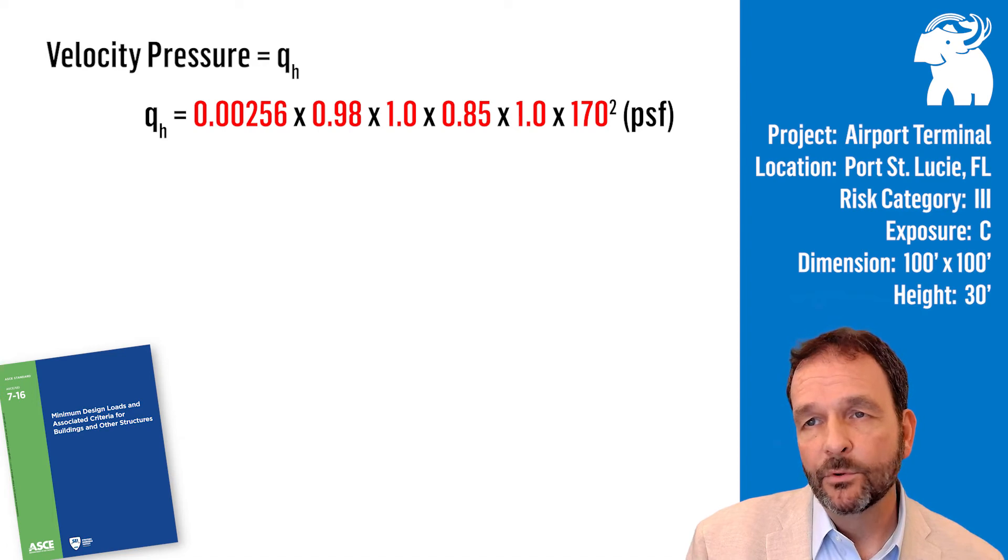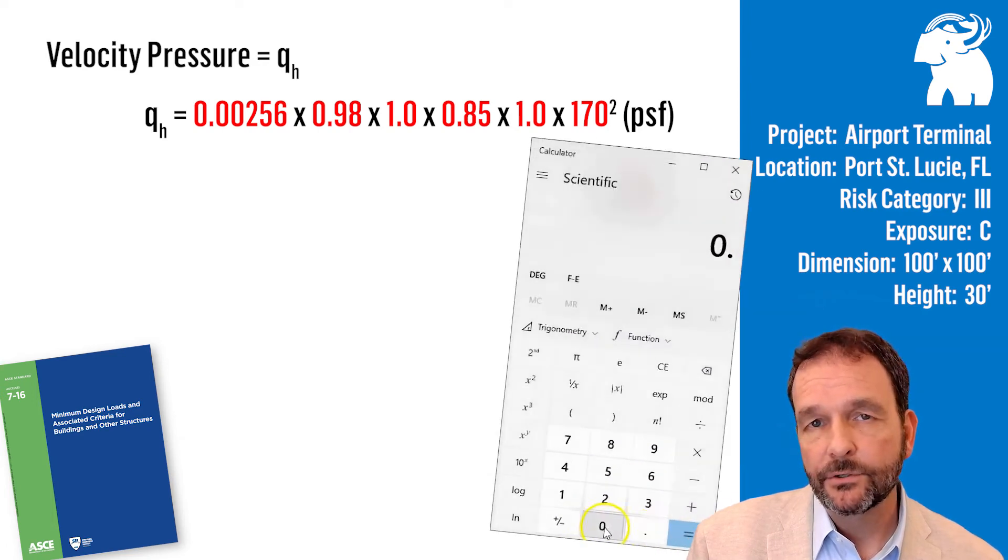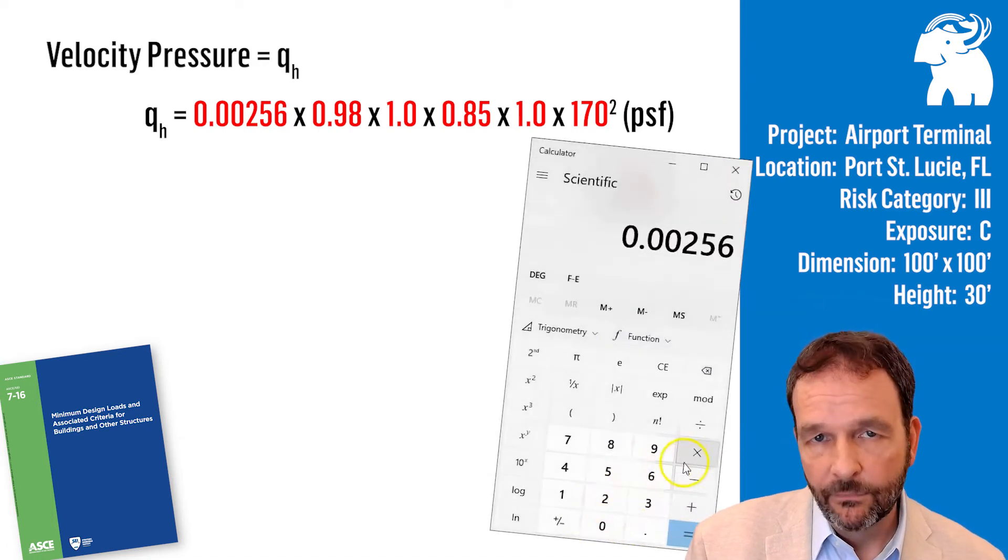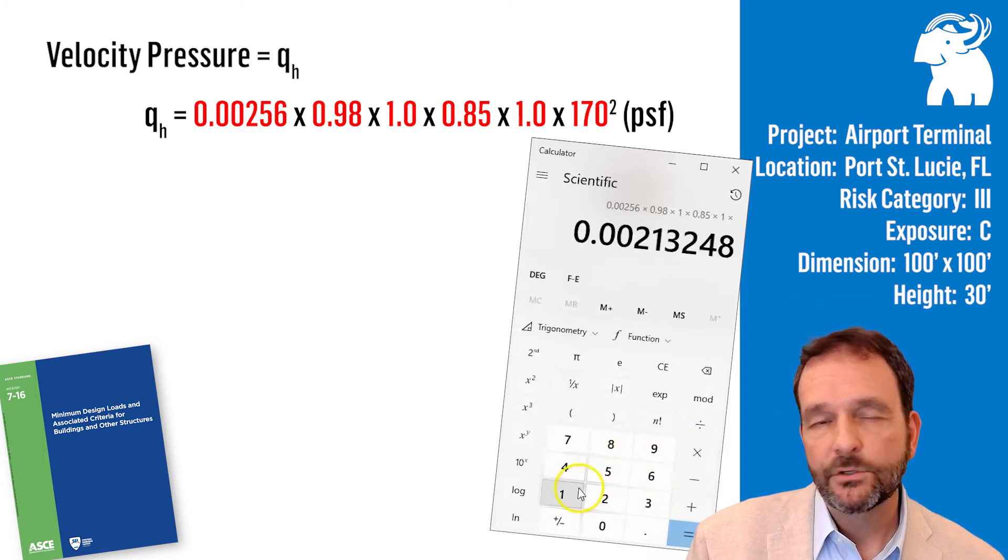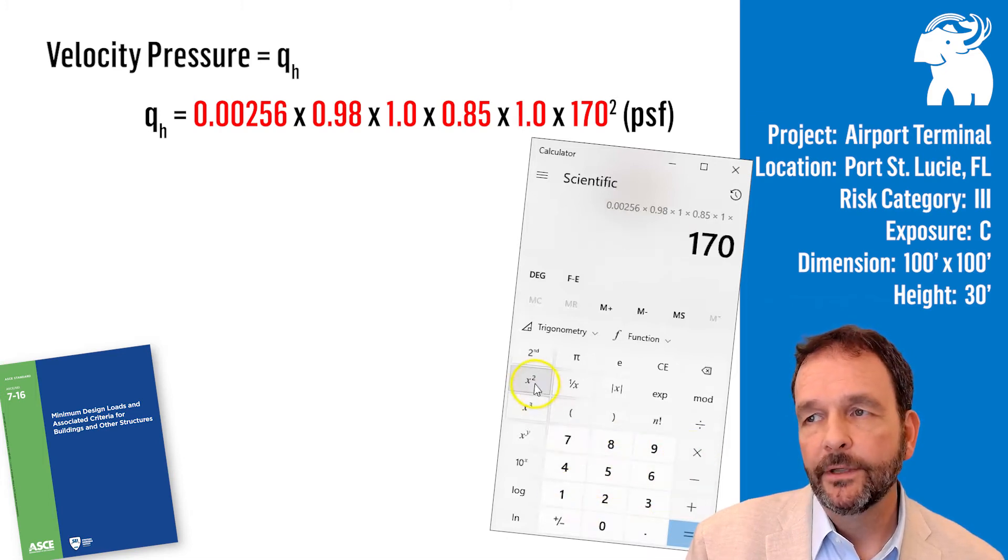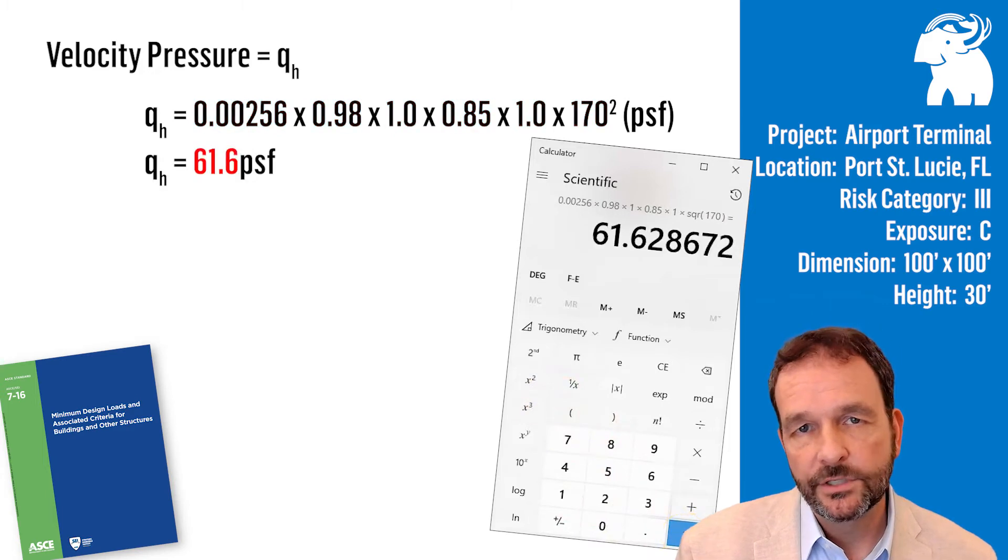Now we have all the variables we need to calculate the velocity pressure, the pressure induced by the wind before it hits the building as it's blowing across the terrain at 30 foot high for our example, before it hits the roof. So we plug all our variables in, and we come up with a velocity pressure of 61.6 PSF.